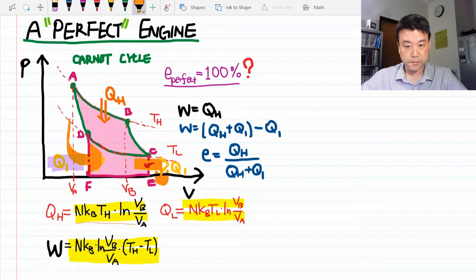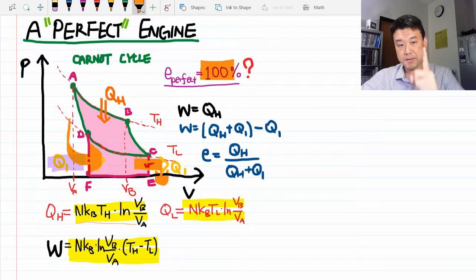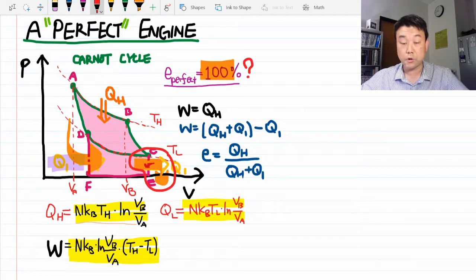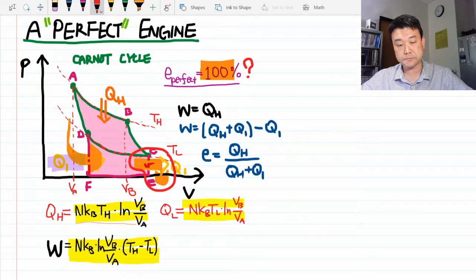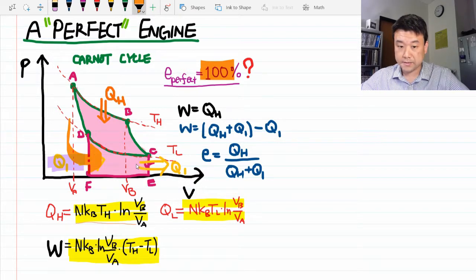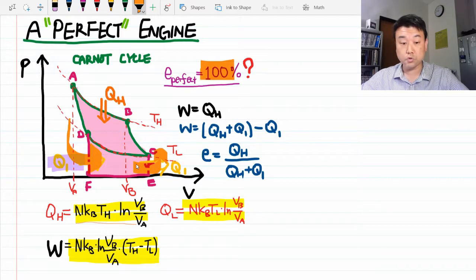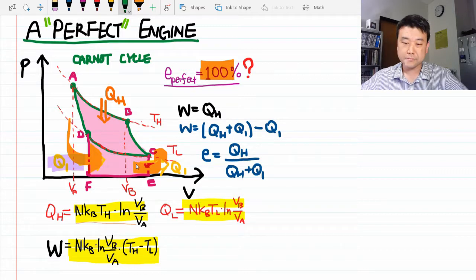If you really want 100% efficient engine, then this is what you need. Instead of this heat here being released into lower temperature reservoir, you need to be able to release this heat into TL. Then these two Q1s will not truly cancel. They are truly equivalent to each other. The minus Q1 here cancels out the plus Q1 here.